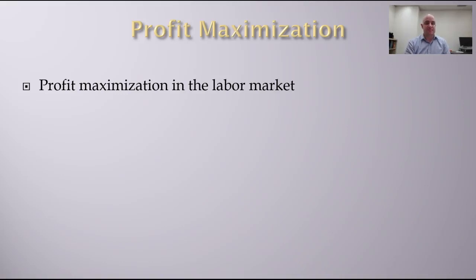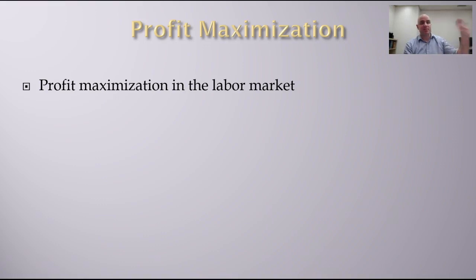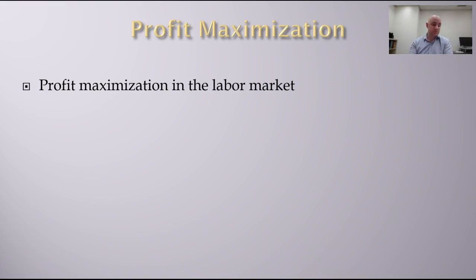Let's look at profit maximization decisions in the labor market. It's assumed that employers are trying to maximize their profits, and they always look at marginal changes to do so. When determining output, they look at marginal revenue versus the marginal cost of each unit. There are two factors they can use to produce output: labor and capital.